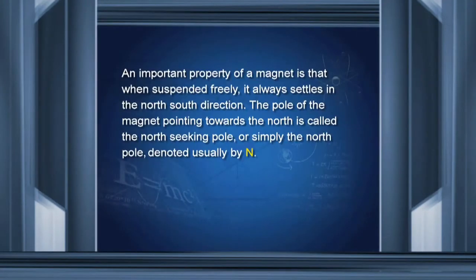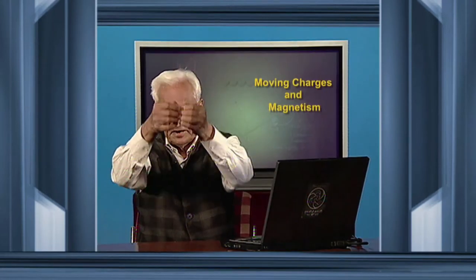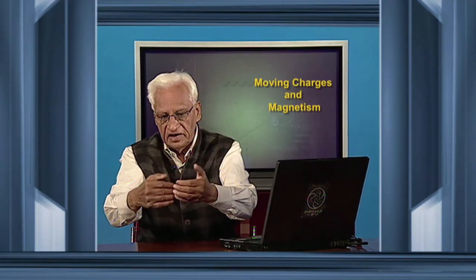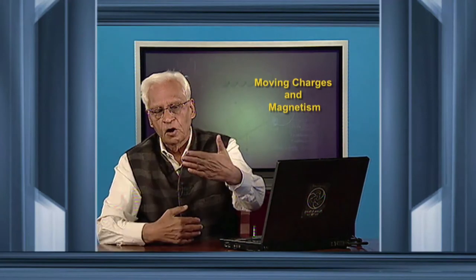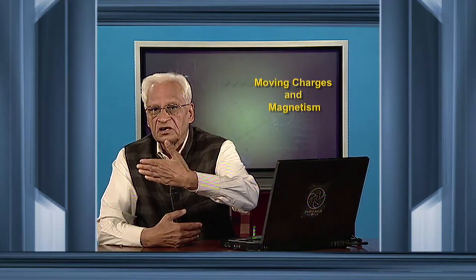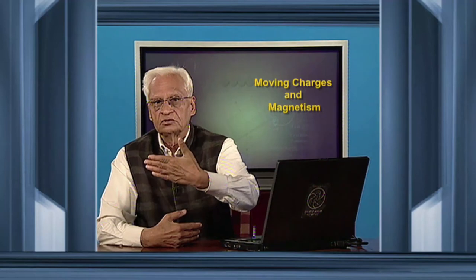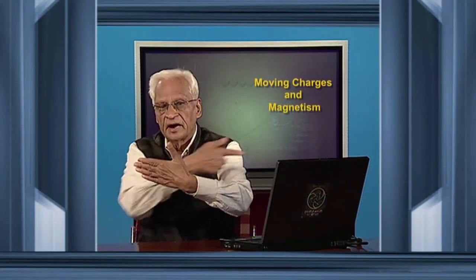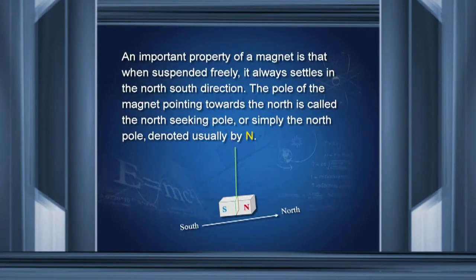An important property of a magnet is that when suspended freely, it always settles in the north-south direction. If I take a magnet and suspend it freely, it will always settle in a direction which is north-south, pointing towards north and towards south as shown here.